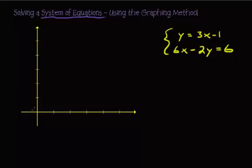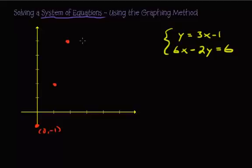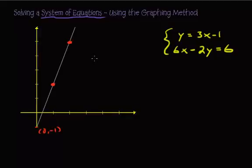The first line, y equals 3x minus 1, has a y-intercept of negative 1, so plot (0, -1). The slope is 3, which means go up 3 for every 1 unit over. So go over 1, up 3 — that's one point — then over 1, up 3 again. We have three dots that look like they're in a straight line, so connect them to make the line y equals 3x minus 1.